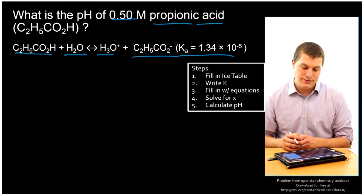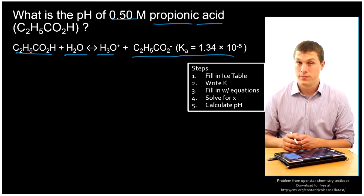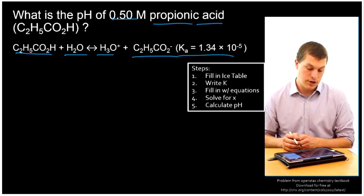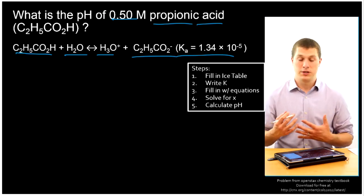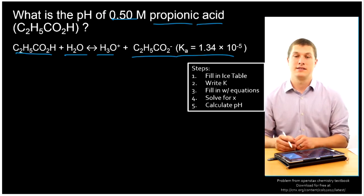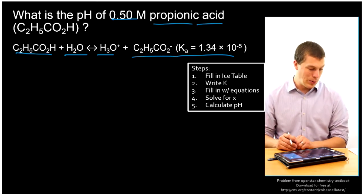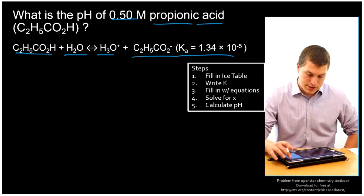So what we have to do with a weak acid is fill in our ice table. And then we're going to write an expression for our K. We're going to fill in that expression with a bunch of equations. We're going to solve for X, and that's going to allow us to calculate pH. So that's a lot. And we'll go slow, one step at a time. So first, our ice table.